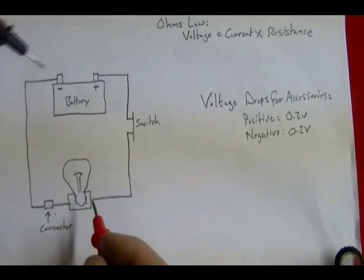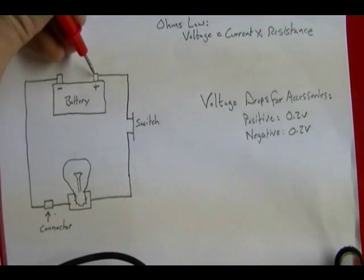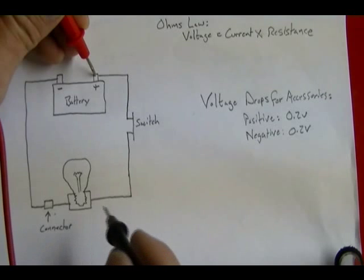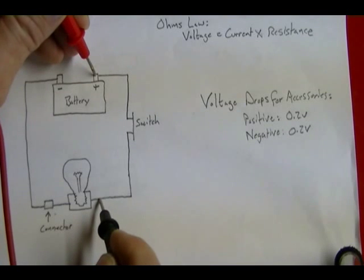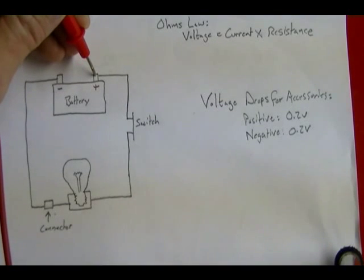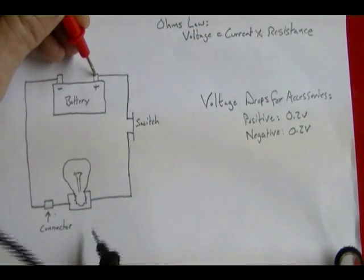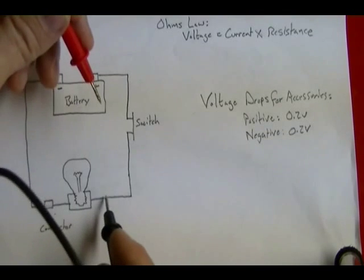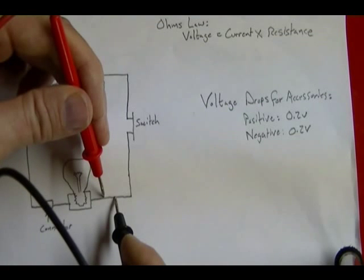If the negative side checked out good, then I would go to the positive side of the circuit. Put my positive lead on the positive terminal and put my negative lead on the connector nearest to the light bulb and measure the voltage drop. On the positive side, it also shouldn't be greater than 0.2 volts. If it is, I'd go through and measure the voltage drop across every connector until I find the one that's creating the high voltage drop.